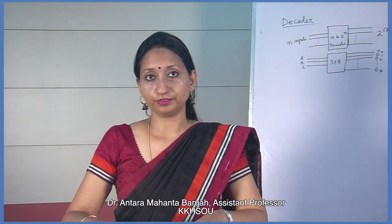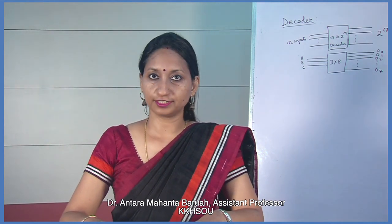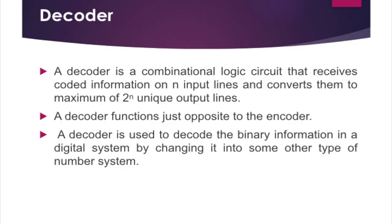Now we discuss about the decoder combinational circuit. A decoder is a combinational logic circuit that receives coded information of n input lines and converts them to a maximum of 2 to the power n unique output lines. A decoder functions just opposite to an encoder, and the decoder outputs will have less than 2 to the power n outputs when some of the n bits decoded information are unused or are don't-care combinations.